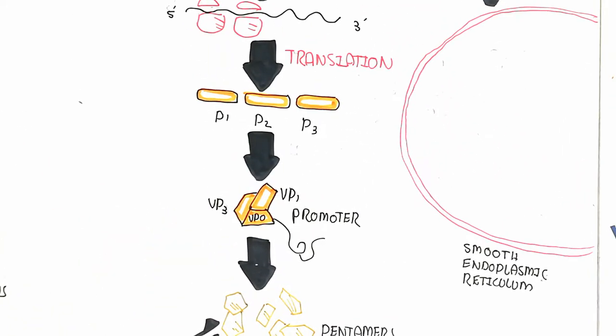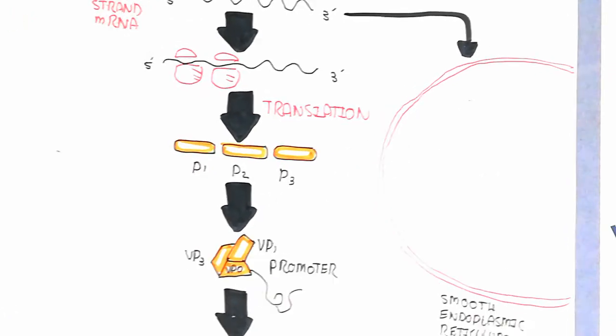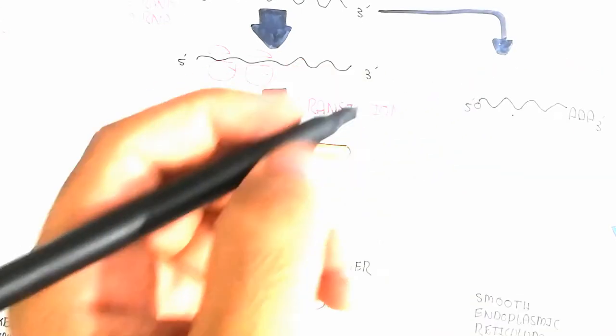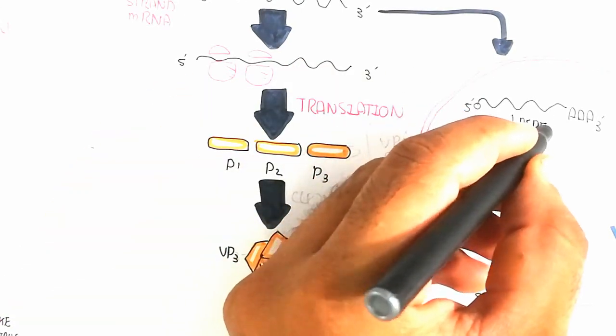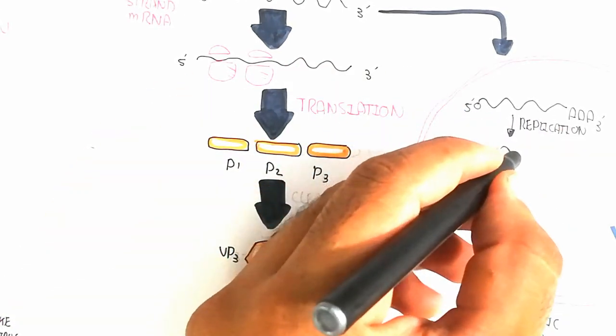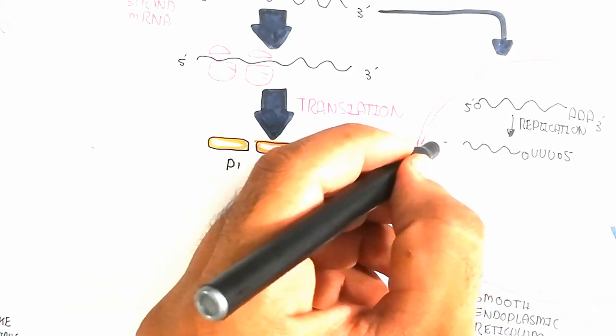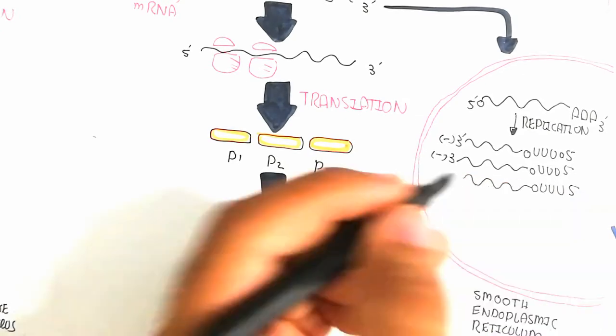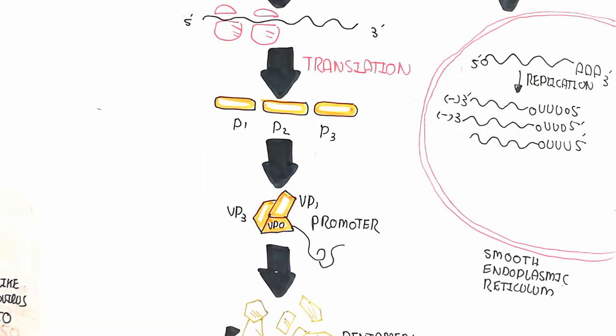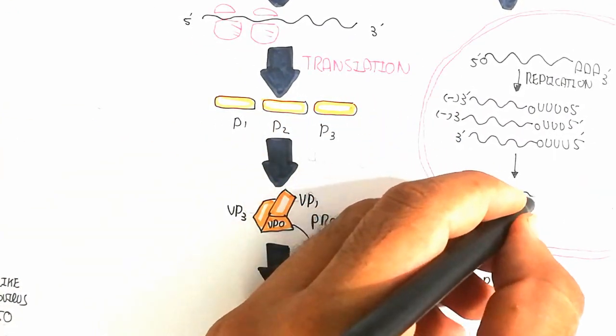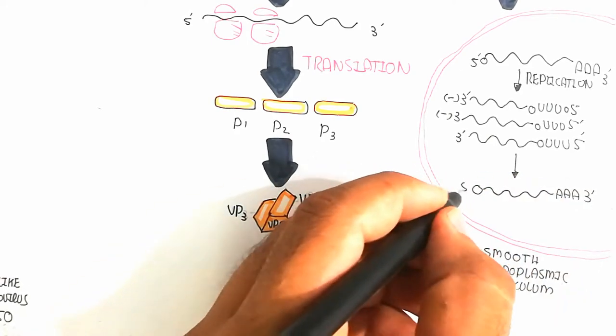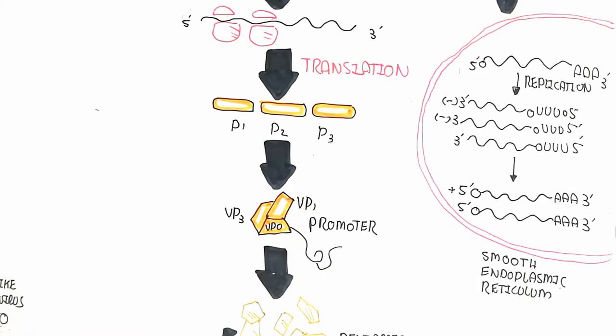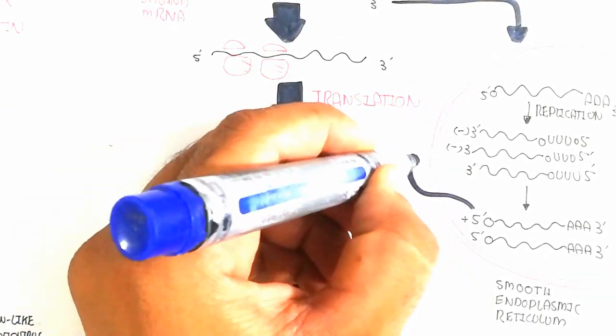This replication also occurs in the smooth endoplasmic reticulum. The replication will occur in 5 prime to 3 prime and 3 prime to 5 prime direction. This is the negative strand, but the previous was the positive strand which is attached to VPg. VPg is a promoter for replication and again works to produce many copies of the positive strand.